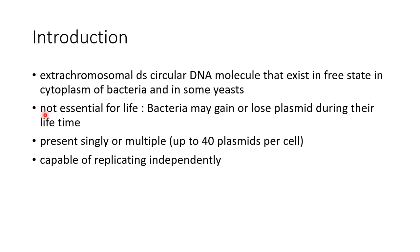Plasmids are not essential for life. Bacteria may gain or lose a plasmid during their lifetime. Plasmids can be present singly, or multiple plasmids — up to 40 plasmids per cell — can be present in a single bacterial cell. Plasmids are capable of replicating independently.